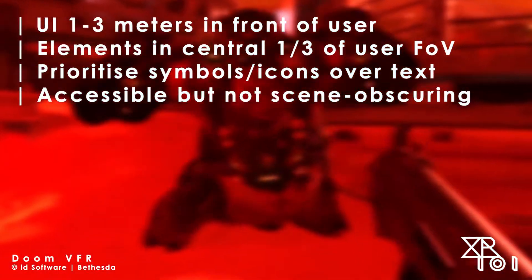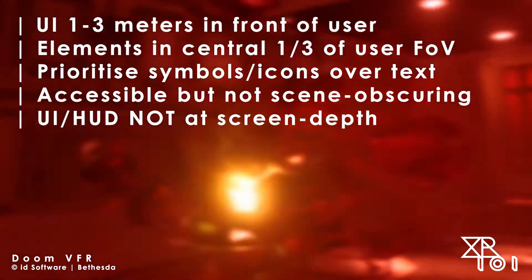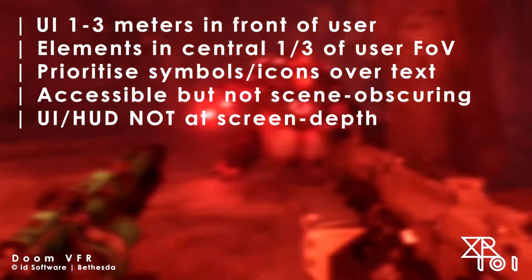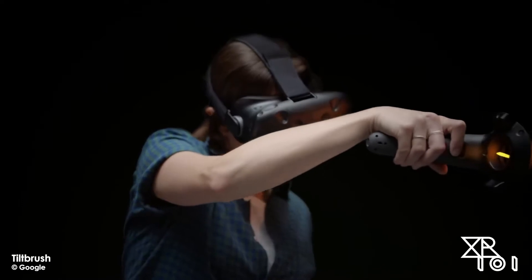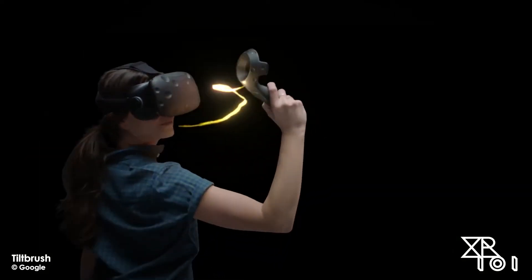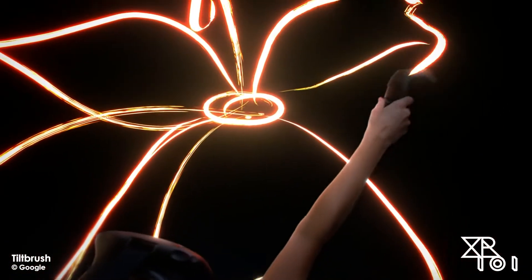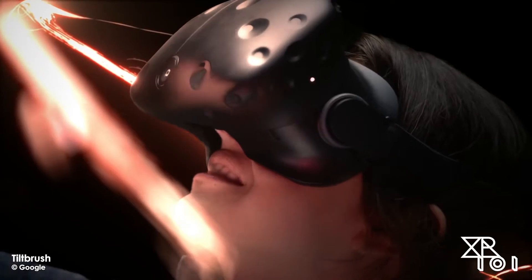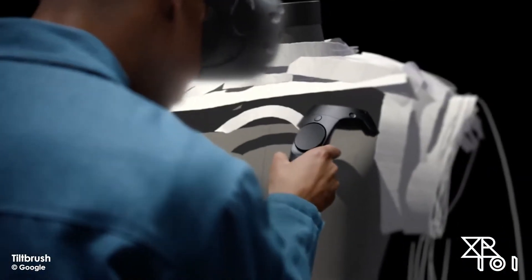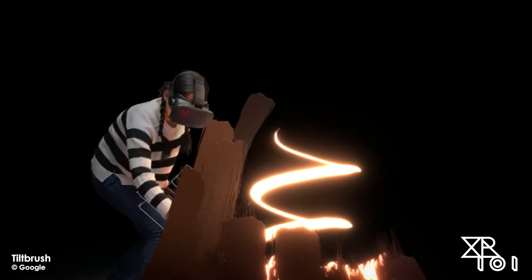It also avoids the cardinal sin of VR UI: placing the UI elements at screen depth, which is how they are usually presented in traditional games. The techniques we've just covered are well thought of as second-tier because in essence they are about adapting a 2D interface design framework for a 3D medium. They are not bespoke, and they don't seek to exploit the unique qualities of VR interaction in order to create a genuinely optimal experience.